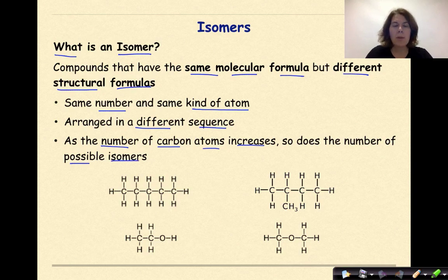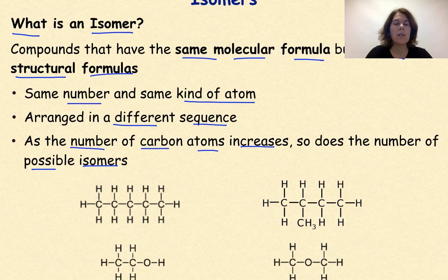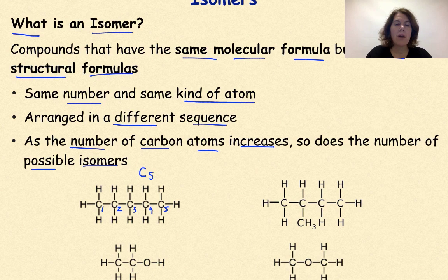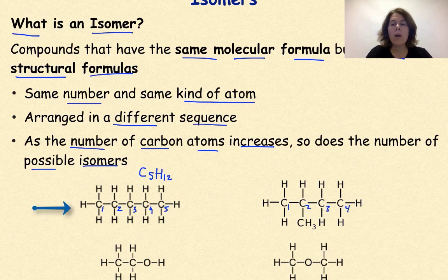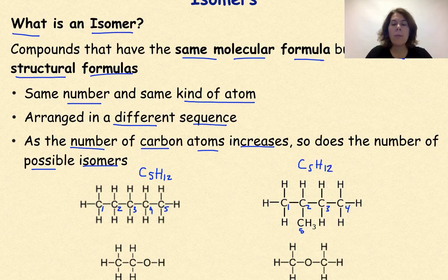So let's look at some examples. Here we have an isomer, and I can count through this and see we have five carbons, so C5. And then if I count all the hydrogens, I'll see that there are ultimately 12 hydrogens. Then I look over at this isomer on my right, and I'll count the carbons again — one, two, three, four, five, because we don't want to miss this carbon down here. So it would be C5, and again, if I count the hydrogens, it will also have 12 hydrogens.